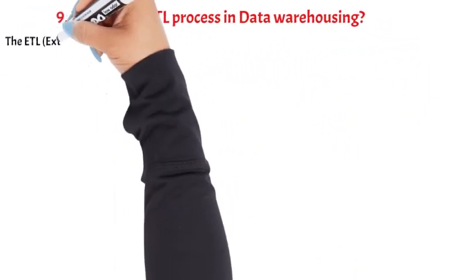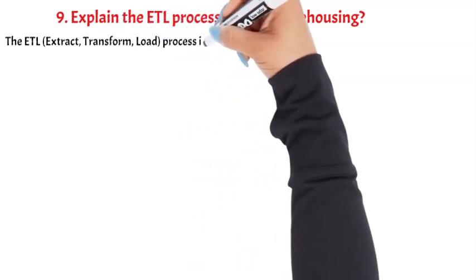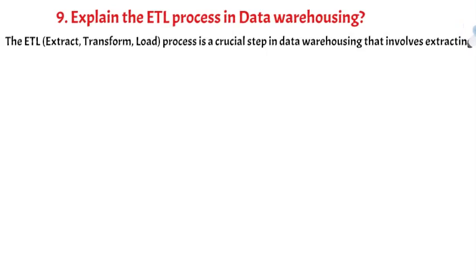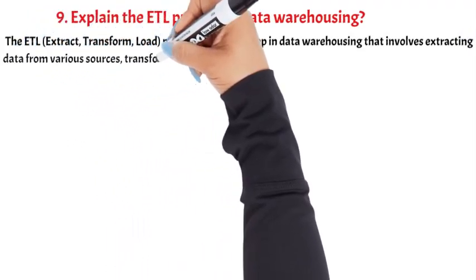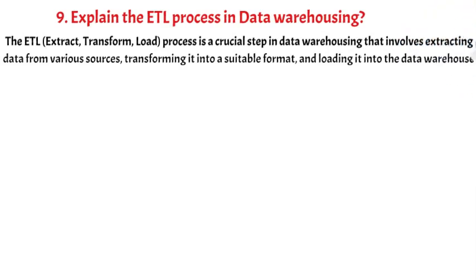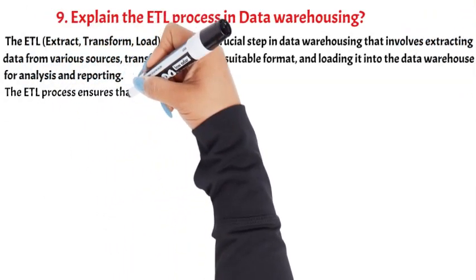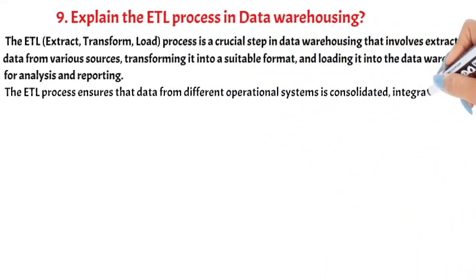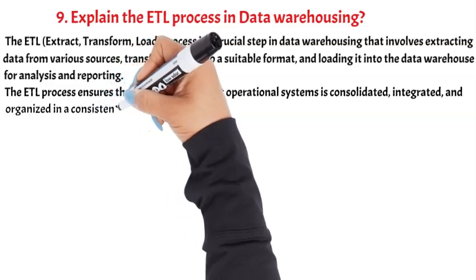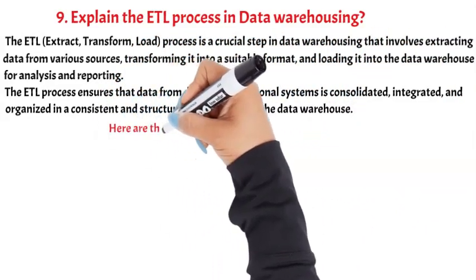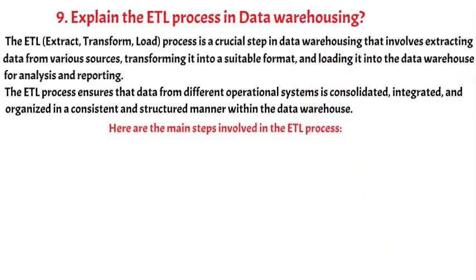The ETL (Extract, Transform, Load) process is a crucial step in data warehousing that involves extracting data from various sources, transforming it into a suitable format, and loading it into the data warehouse for analysis and reporting. The ETL process ensures that data from different operational systems is consolidated, integrated, and organized in a consistent and structured manner within the data warehouse.